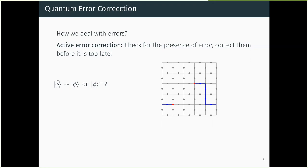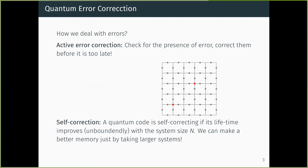Rather than active error correction, I want to talk about self-correction. The idea is: how long do we need to wait before the decision about which errors occurred becomes tricky? If not much time has passed, all errors are small and close together, so no correction is needed. The key question is whether the lifetime of the memory improves as we take a larger system. This square lattice has a parameter n, the diameter of the torus, and if taking n larger improves the lifetime, that is self-correction.